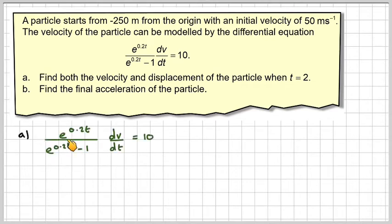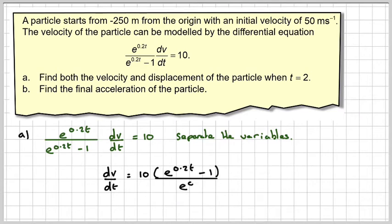We've got this differential equation. What we're going to need to do is to separate the variables. We're going to take these over to here. So dv by dt is equal to 10 times e to the 0.2t minus 1 divided by e to the 0.2t.